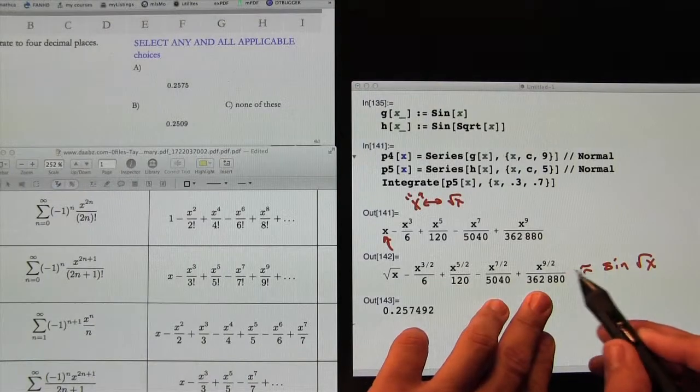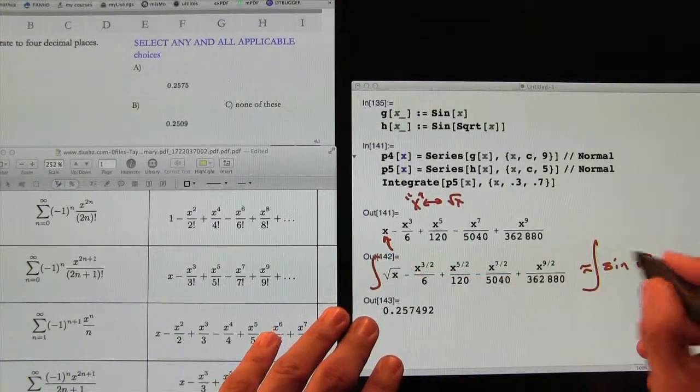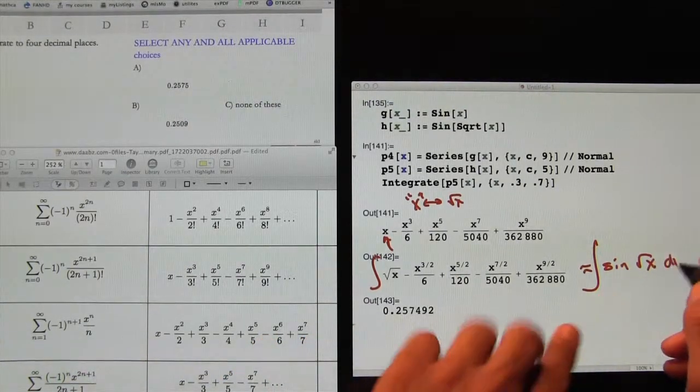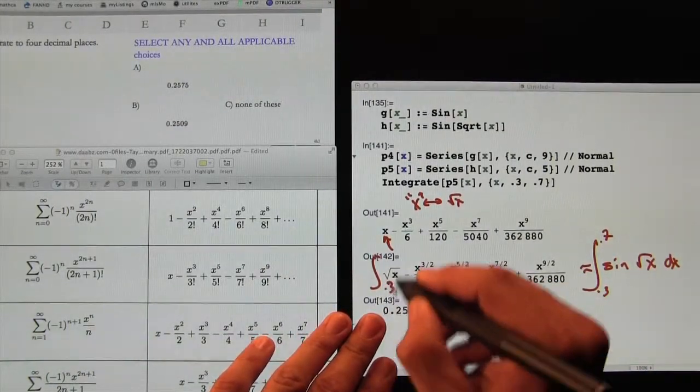I say approximate because there's really more stuff here. It's infinitely long. And so again, this integral is really hard to find. This one, from 0.3 to 0.7, it's nearly impossible. However, this one is very doable.